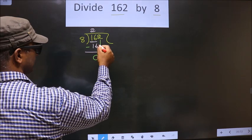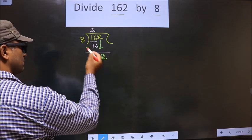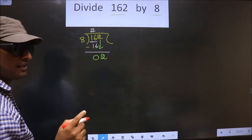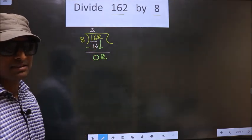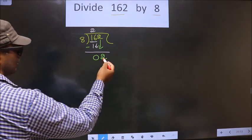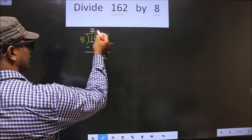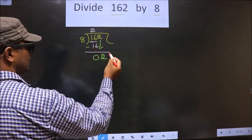Now, you bring this number down. That is 2. Now, 2 is smaller than 8. This is where the mistake happens. And what is the mistake that many do is this one. 2 is smaller than 8. So, what they do is they put a dot and take 0 here.